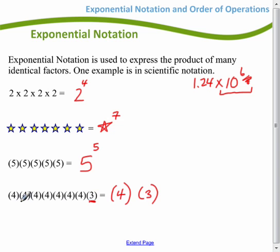So I won't be able to do anything with the three, but I will be able to raise the 4 to the 1, 2, 3, 4, 5, 6. There's seven of them. Okay, so that's how I can write exponential notation. So it's just an easy way for me, if I've got multiple identical factors, just an easy way to write those.